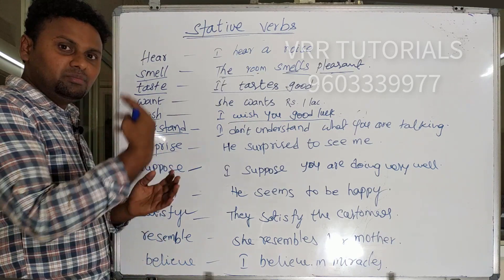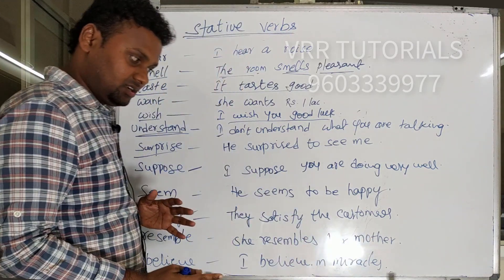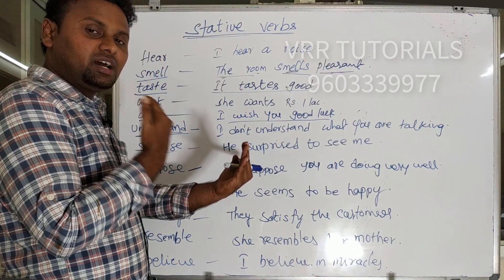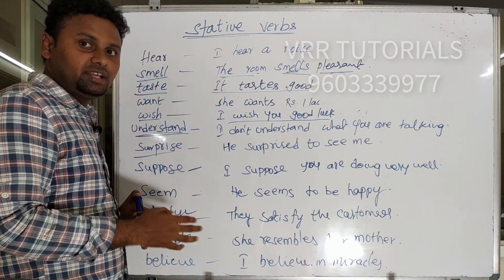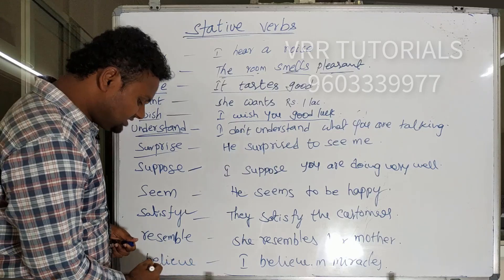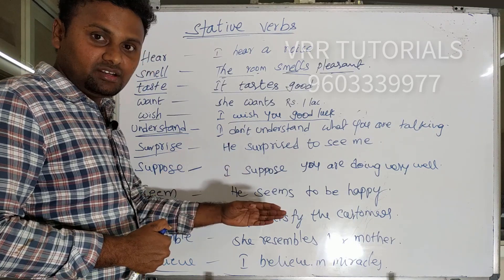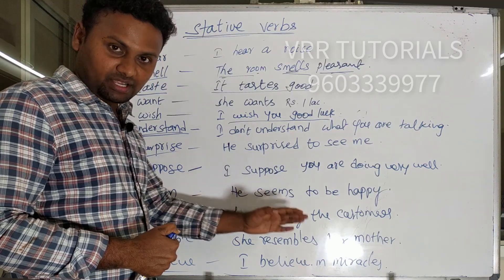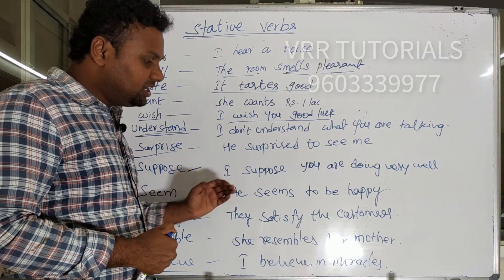Next: 'resemble,' which means having the same appearance or same looking. She resembles her mother — they look alike. Don't say 'she is resembling her mother.' She resembles her mother. Next: 'believe.' I believe in miracles. Don't say 'I am believing in miracles.' Just say: I believe in miracles, or I believe in God.